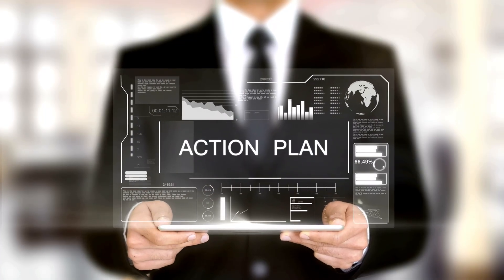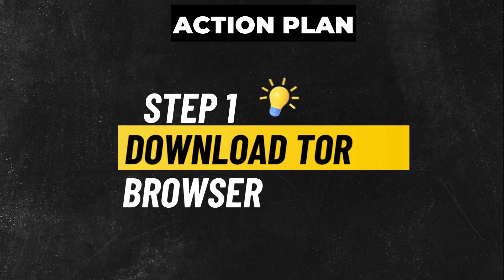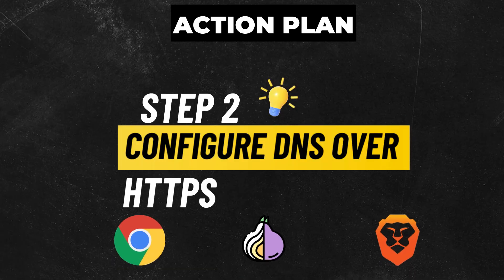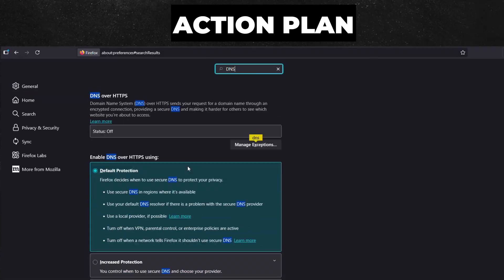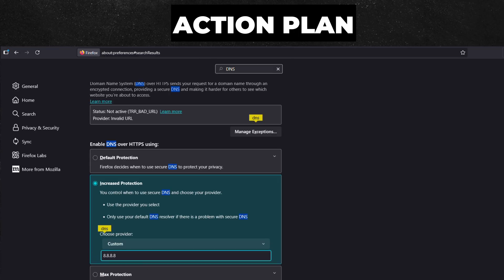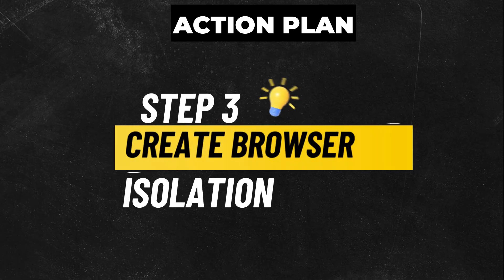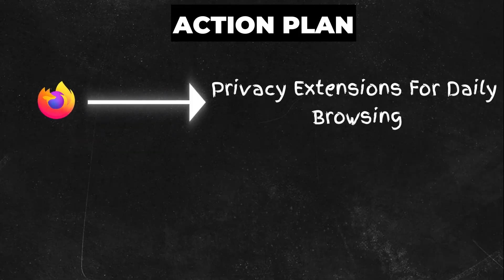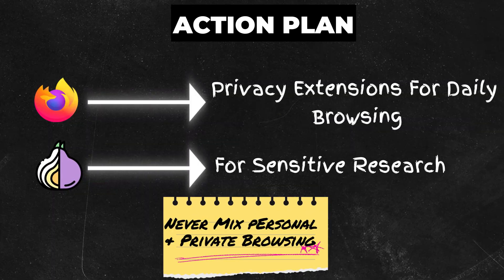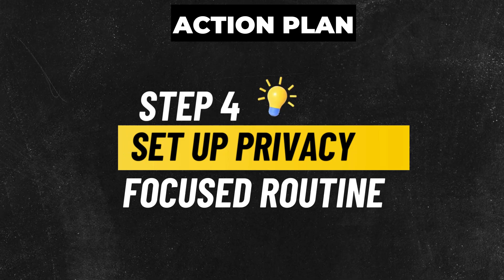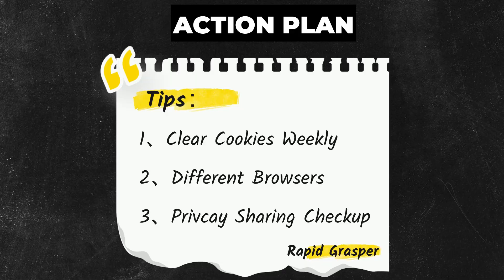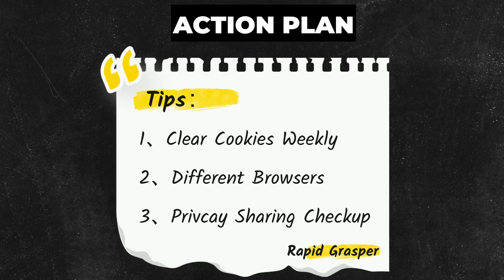Here's your action plan to reclaim your digital privacy starting today. Step 1: download the Tor browser and set it up properly. Step 2: configure DNS over HTTPS in your regular browser — go to your browser settings, find DNS settings, and switch to Cloudflare's 1.1.1.1 or Quad9 Secure DNS, referring to the document linked below. Step 3: create browser isolation — use Firefox with privacy extensions for daily browsing and Tor for sensitive research, and never mix personal and private activities in the same browser session. Step 4: set up a privacy-focused routine — clear cookies weekly, use different browsers for different purposes, and regularly check what data you're sharing through privacy checkup tools.